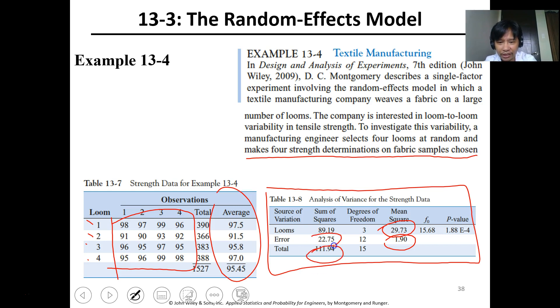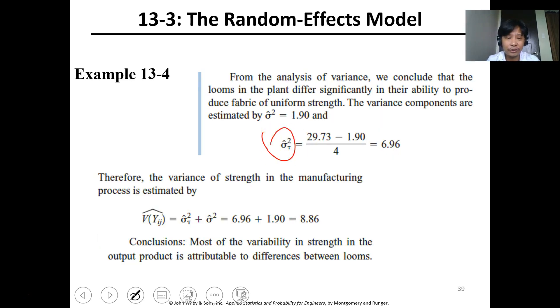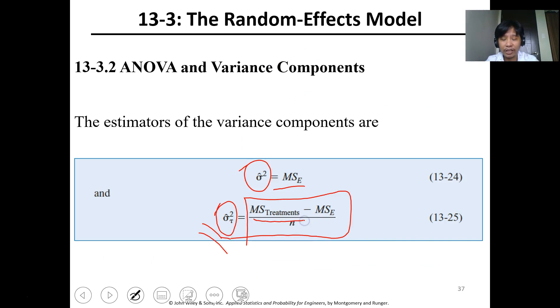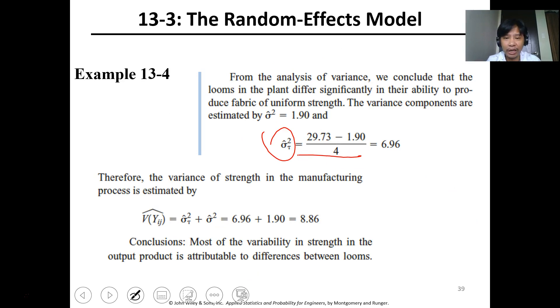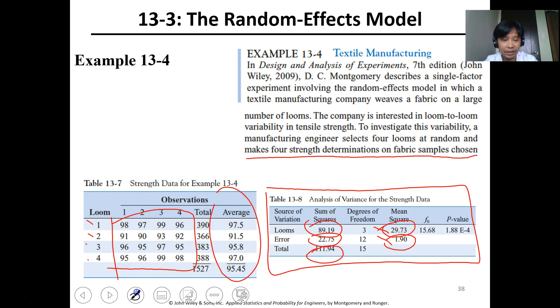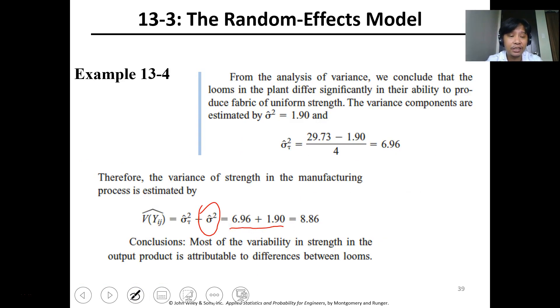This is the SS total, SSE, SS treatment. To get tau squared, use the formula MS treatment minus MSE divided by n, which is 4. So this value is 29.73. This is your MS treatment or MS of loom. This is the MSE of error, 6.91. The variance is the MSE. You get the variance for the whole, the variance of strength in the manufacturing process is 8.86. So meaning, most of the variability in strength in the output product is attributed to loom. There's a significant factor of the loom.